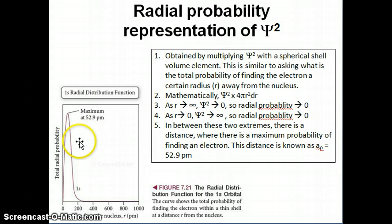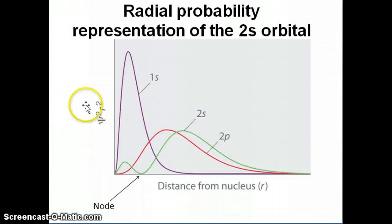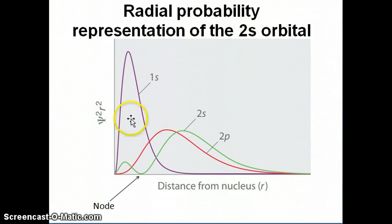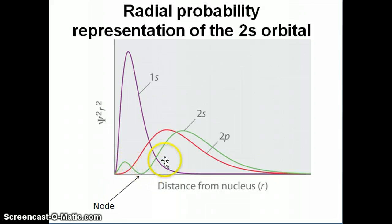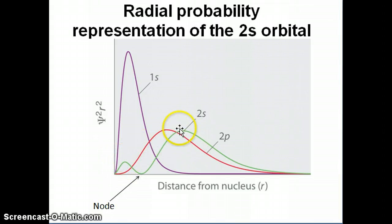You'd expect that for a bigger orbital that maximum distance value would be further away, and that's the case. Here's a representation of the 2s orbital — the green plot — compared to the 1s orbital, which is the purple plot. The 2s orbital has two maxima: one closer to the nucleus and another larger one further away from the nucleus compared to the 1s.